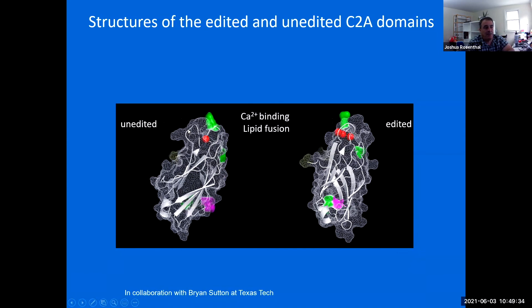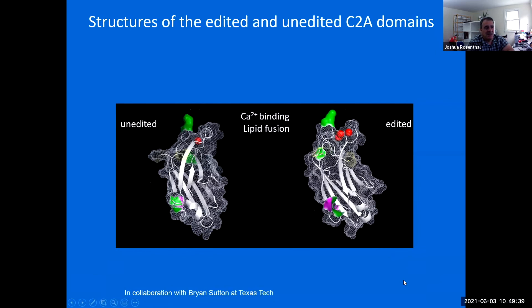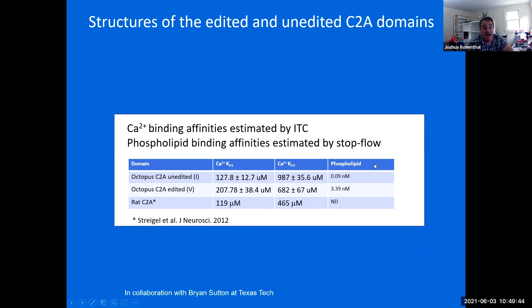We didn't know what this was going to do because the calcium binding here you see with these red dots and the domain that's responsible for lipid fusion is up here. And so, Brian tested these two different versions with their ability to either bind calcium or bind phospholipids, which is sort of a surrogate for binding the plasma membrane.